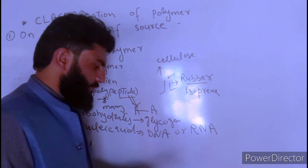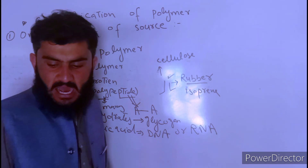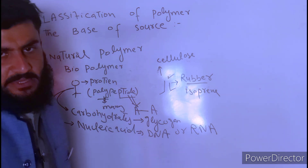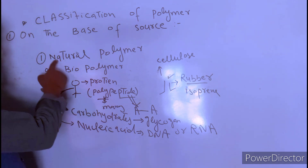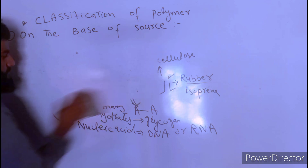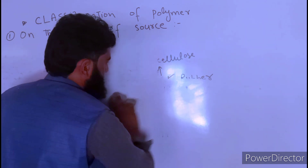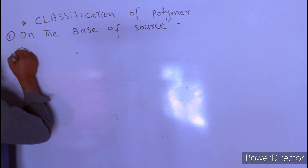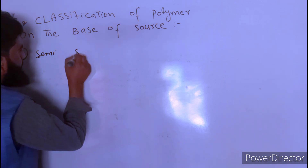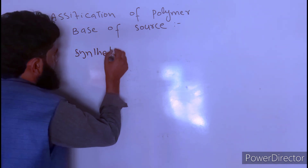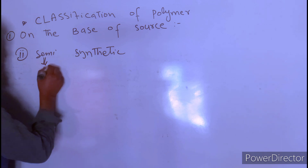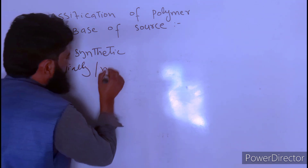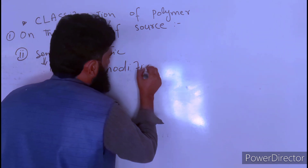Now we discuss the second class of polymers, also classified on the basis of source. This is semi-synthetic polymers. The word semi means partially, so it involves partial modification.